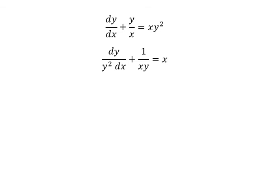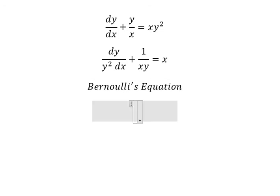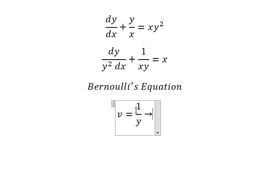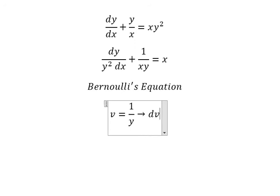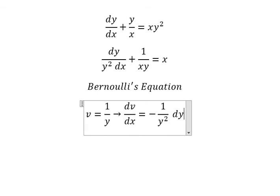Now we can use the Bernoulli equation. So I will let v equal 1 over y. We need to first take the differential of this. We differentiate both sides, so we get dv over dx equals negative 1 over y squared times dy over dx.